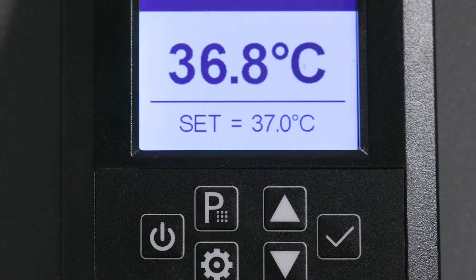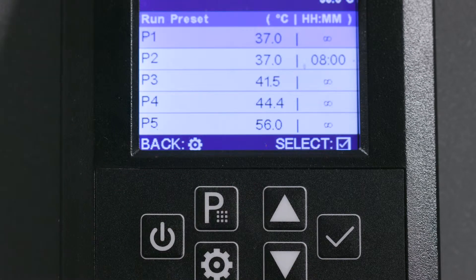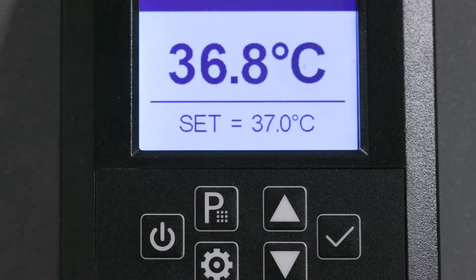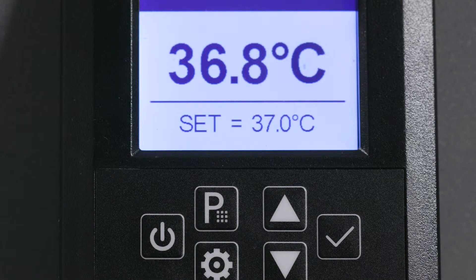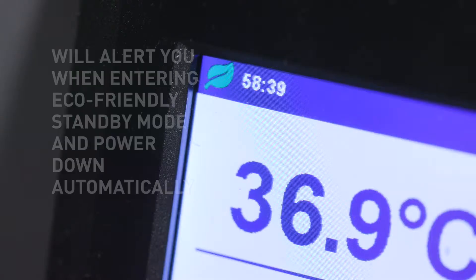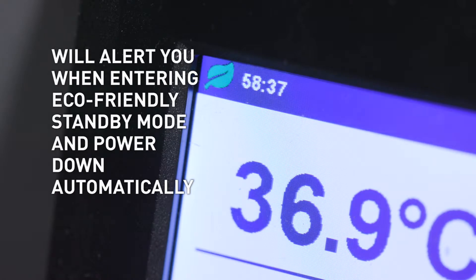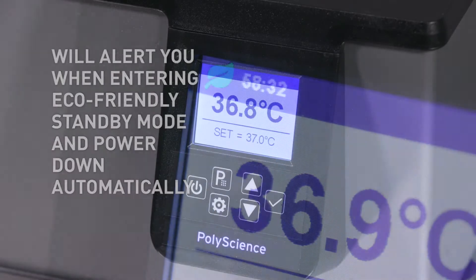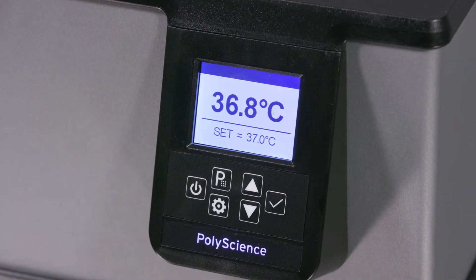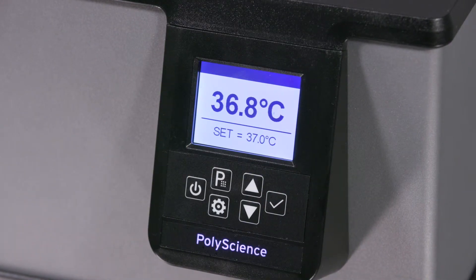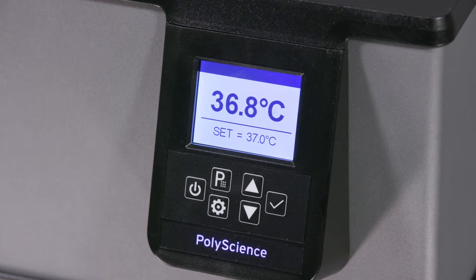Now you are able to select a preset temperature, let it run for the exact time and temperature you want and when it's done your PolyScience water bath will alert you that it's about to enter an eco-friendly standby mode and power down automatically. This function not only increases energy efficiency but safety for you and your lab.